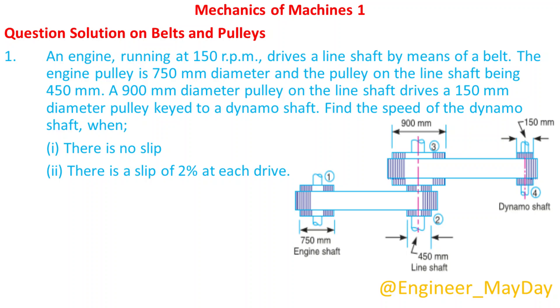Let's begin with this question. An engine, running at 150 rpm, drives a line shaft by means of a belt. The engine pulley is 750mm diameter and the pulley on the line shaft being 450mm. A 900mm diameter pulley on the line shaft drives a 150mm diameter pulley keyed to a dynamo shaft.